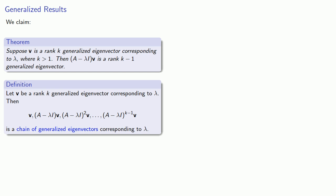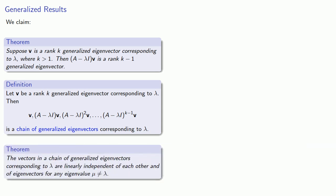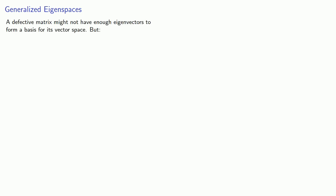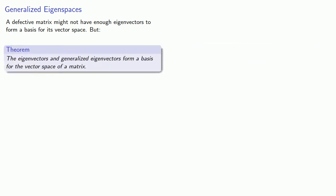The vectors in a chain of generalized eigenvectors corresponding to lambda are linearly independent of each other and also of the eigenvectors for any eigenvalue mu not equal to lambda. We like linear independence because it gives us a basis, leading to the idea of a generalized eigenspace. A defective matrix might not have enough eigenvectors to form a basis for its vector space, but the eigenvectors and generalized eigenvectors together do form a basis. We'll prove this — by assigning it as a homework problem.